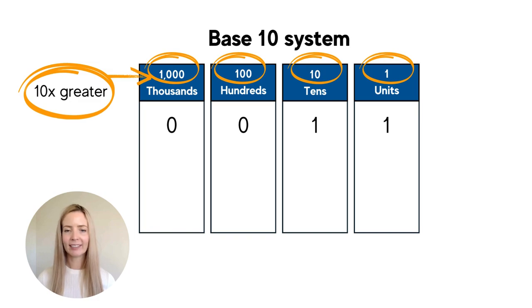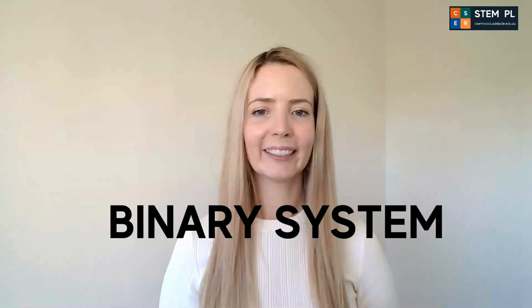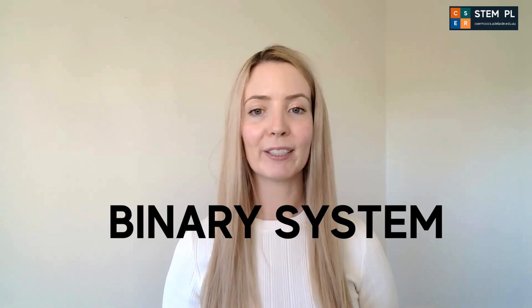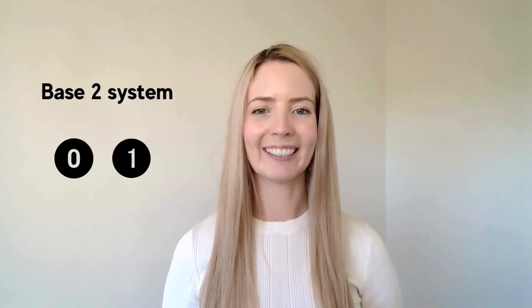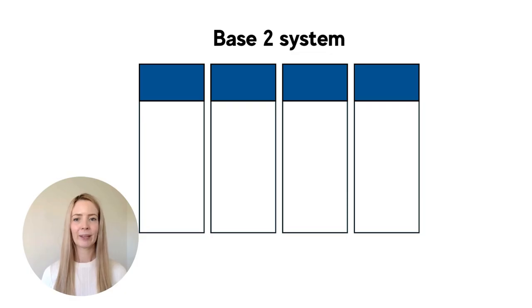You will notice this is different to a base two system in a moment. The binary system works with the base of two. So this means that we're working with two numerals, which are zero and one. Previously, we worked with these columns, and we can do the same to explore binary because it can make it a little bit easier to understand when we work with something that we know.